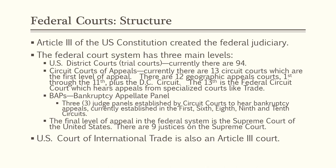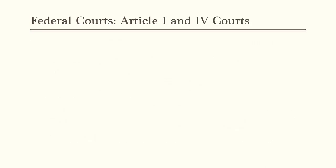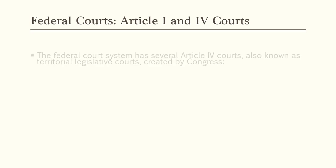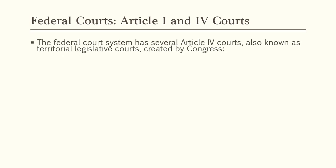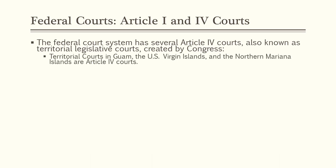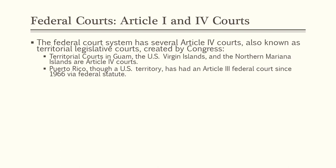The U.S. Court of International Trade is also what they call an Article III court. In addition to Article III courts, the federal court system has several courts created under Article I and Article IV — also known as territorial legislative courts created by Congress. Territorial courts in Guam, the U.S. Virgin Islands, and the Northern Mariana Islands are all Article IV courts. Puerto Rico, though it is a U.S. territory, has had an Article III federal court since 1966 via federal statute.